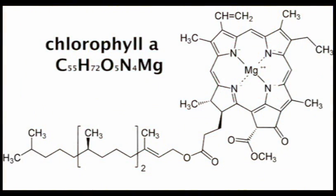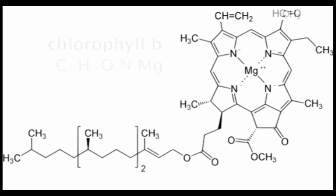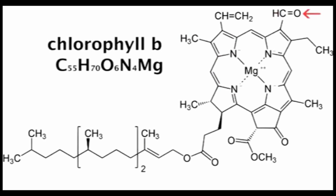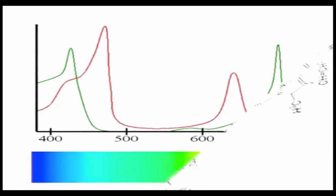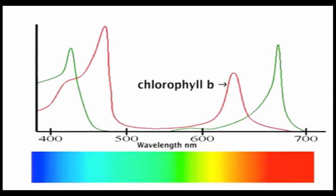Chlorophyll B is just slightly different from chlorophyll A in that one CH3 methyl group has been replaced by a CHO aldehyde group. As a result of this rather small chemical change, chlorophyll B absorbs light at a different wavelength than chlorophyll A.